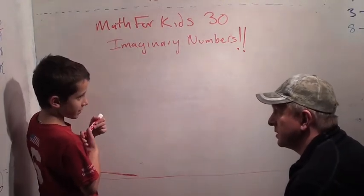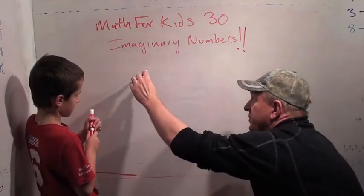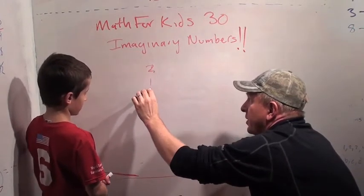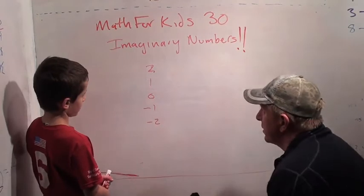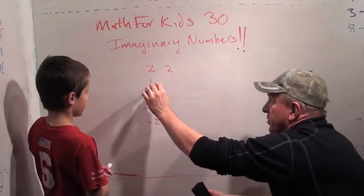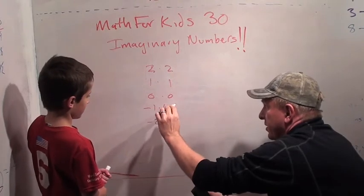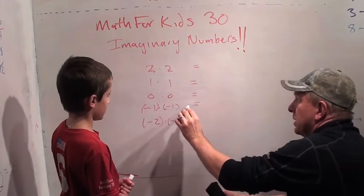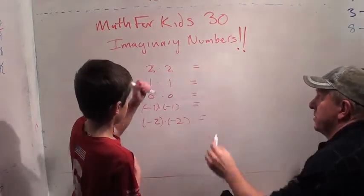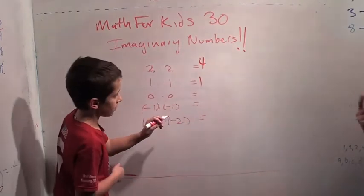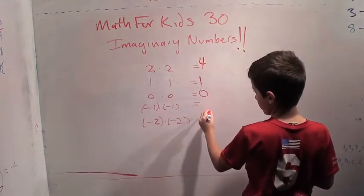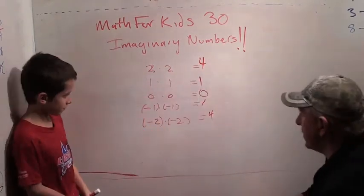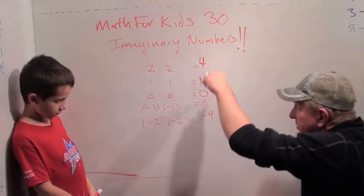We've learned about numbers like one, two, zero, minus one, minus two. When you square these numbers — two times two, one times one, zero times zero, minus one times minus one, minus two times minus two — let's see what we get. Two times two is four. Zero times zero is zero. Minus one times minus one is one. Minus two times minus two is four. The one thing we notice is they're never negative.